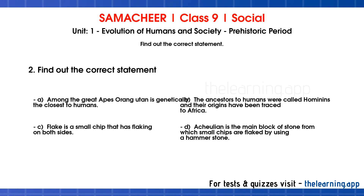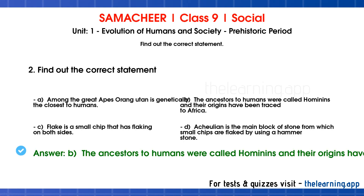Second find-the-correct-statement question. Option A: among the great apes, orangutan is genetically closest to humans. Option B: the ancestors to humans were called hominins and their origins have been traced to Africa. Option C: a flake is a small chip that has flaking on both sides. Option D: Acheulian is the main block of stone from which small chips are flaked using a hammer stone. The correct answer is Option B — ancestors of humans were called hominins and traced to Africa. Option A is wrong because chimpanzee, not orangutan, is closest. Option D is wrong because Acheulian refers to the core, not the tool type described.